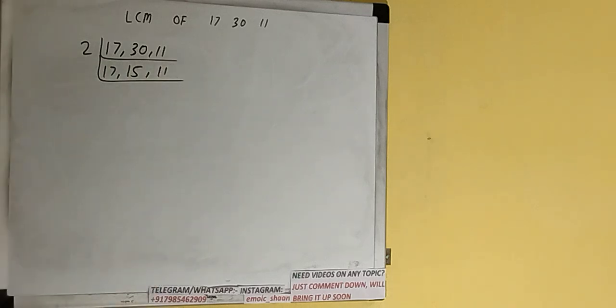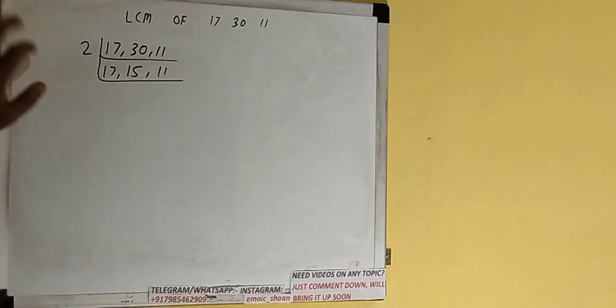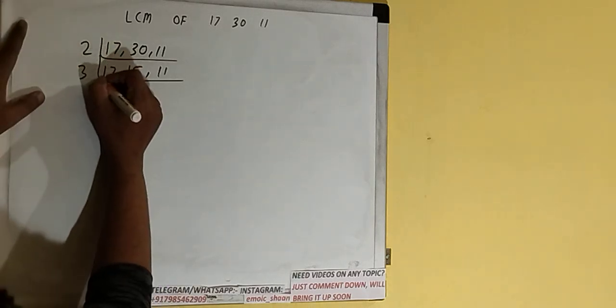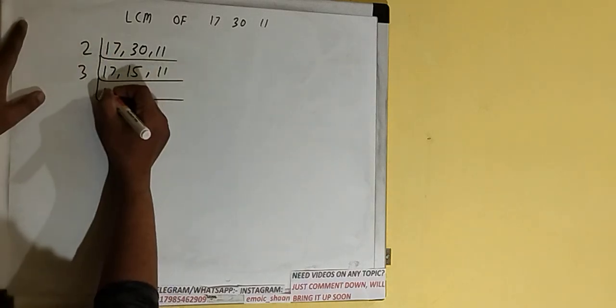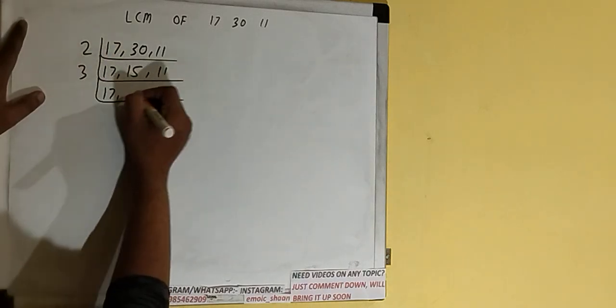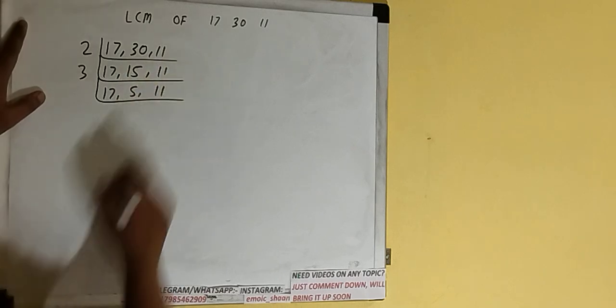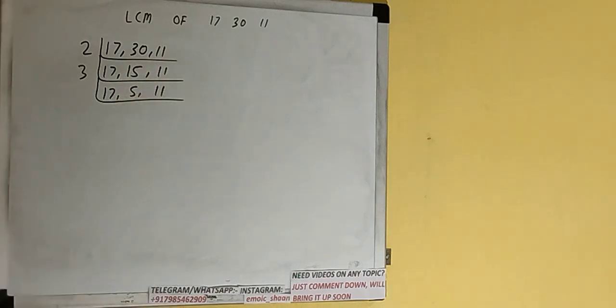So we check with the next lowest prime number, which is 3. The second number is divisible by 3, so we divide and we'll have 17, 5, 11.